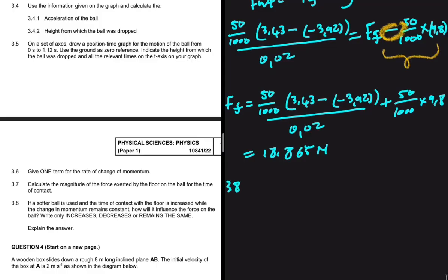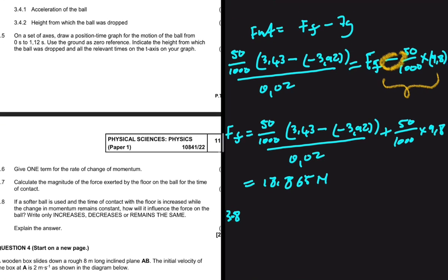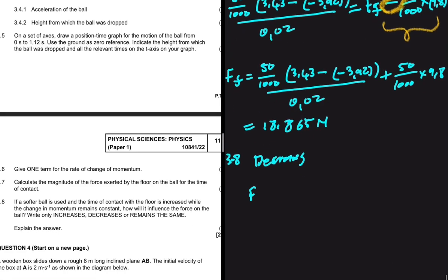The answer for 3.8 is that the force decreases. We have deduced that Fnet = Δp ÷ Δt. If the change in momentum is kept constant and we increase the change in time, Fnet decreases — because Fnet is inversely proportional to the time of contact.